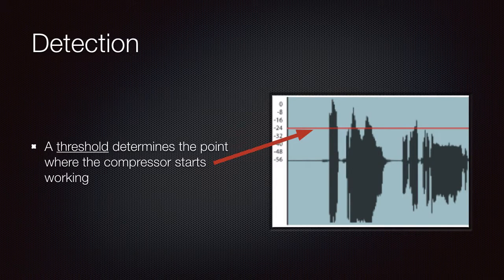Now let's talk about the detection stage. In this stage, a circuit analyzes the signal's level according to certain thresholds. If the signal is below the threshold then there won't be any change. If the signal goes above the threshold then there will be a gain reduction.